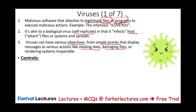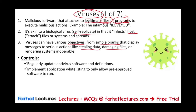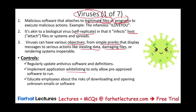Common controls for viruses include educating users, having antivirus software, and having a network firewall. The first defense is antivirus software that is regularly updated — since viruses mutate and new ones are introduced daily, the software must be updated, often on a daily basis. Implement application whitelisting to only allow pre-approved software to run, and educate employees about the risk of downloading or opening unknown emails or software.